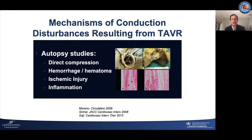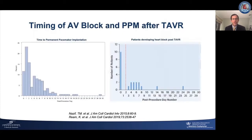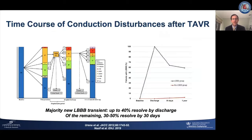Elegant autopsy studies have shown the mechanisms of injury to include direct compression, hemorrhage or hematoma, and ischemic injury or inflammation. Atrioventricular block is primarily a periprocedural phenomenon, occurring most frequently at the time of the procedure within the first 48 hours. However, so-called delayed AV block can occur in up to 2 to 10% of patients, primarily concentrated within the first week but with a residual hazard out to about 30 days. New onset left bundle branch block also occurs predominantly at the time of the procedure but has been shown to resolve in the majority of cases, both within the index hospitalization and out to about 30 days.